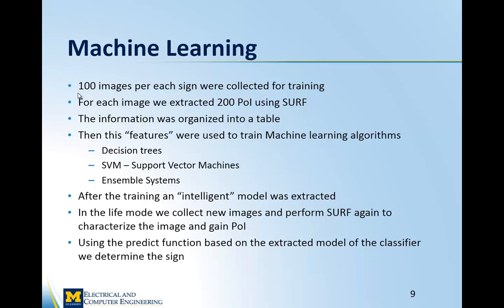I used decision trees, support vector machines, and ensemble systems for training. After training, an intelligent model is extracted. In live mode, we collect new images and perform SURF again to characterize the image and obtain regions of interest. After getting points of interest from the live stream image, we use the predict function in MATLAB — based on the extracted model from the training phase — to determine what sign it is. Essentially, we get data points from the computer vision part, input them into a machine learning algorithm, and predict based on it.